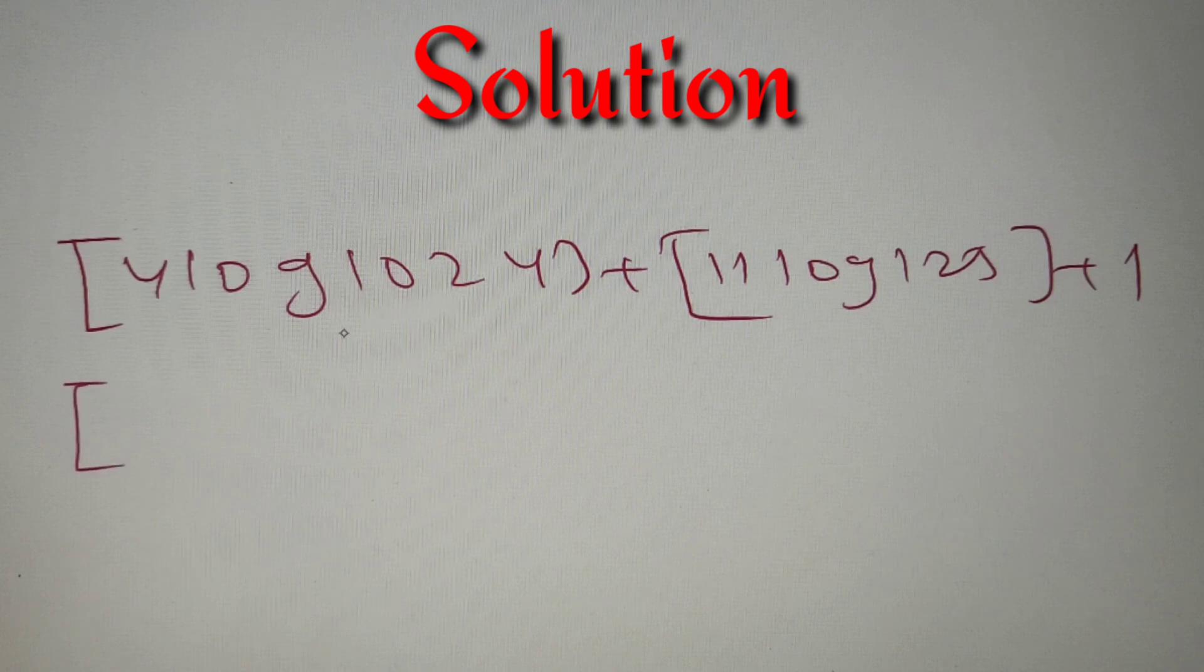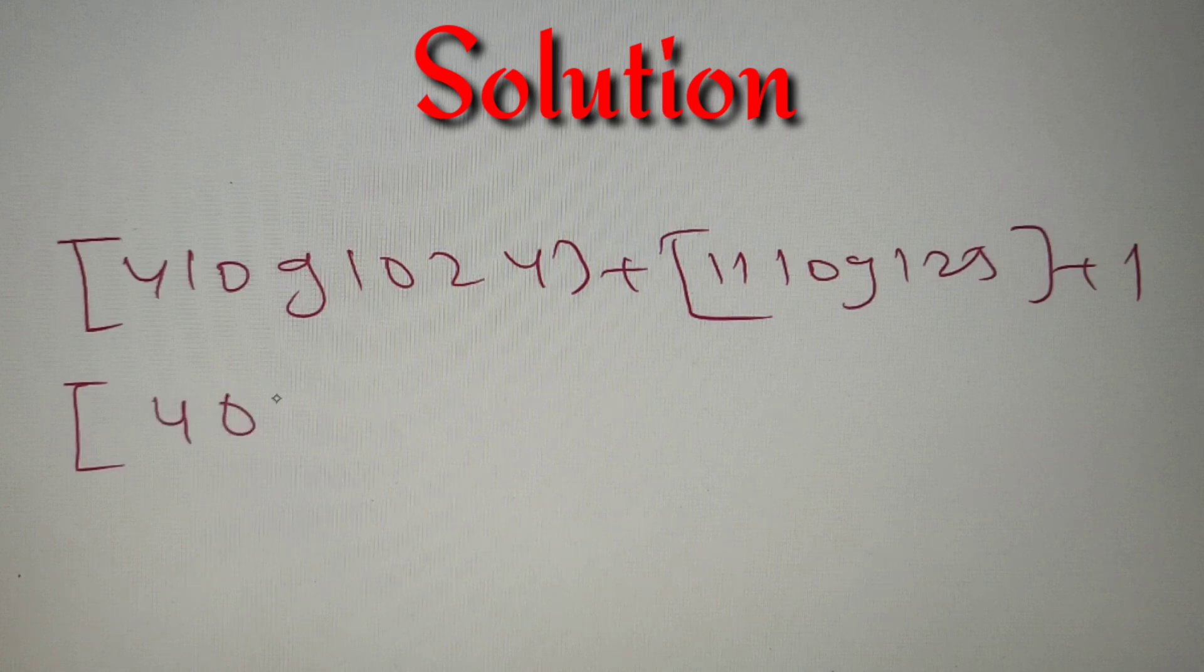Now we know that log 1024 can be written as log 2 raised power 10, and log 2 raised power 10 is equal to 10 log 2, so we'll eventually get 40 log 2 in the greatest integer function.